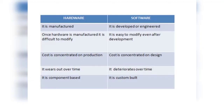Now, how is software different from hardware? Hardware is always manufactured while software is always developed or engineered. Hardware को manufactured कहते हैं, software को developed कहते हैं। Similarly, if you want to make modifications after hardware is built, it is very difficult, but in software, logical changes can be made — modification possible है। Cost के बारे में: किसी भी hardware की cost उसके production पर depend करती है, जबकि software की cost उसके design पर depend करती है।